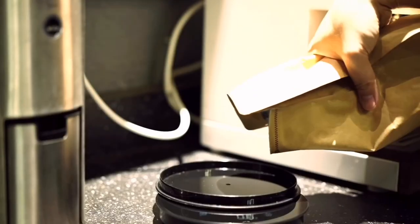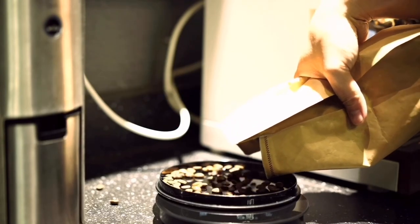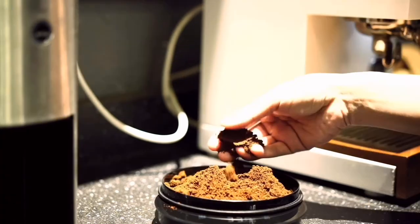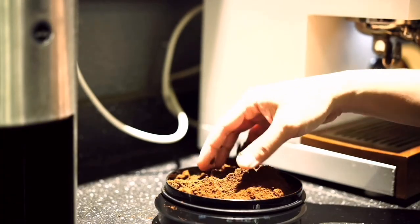Well for a double shot portafilter, I usually grind 17 to 19 grams of coffee. The amount changes because when the coffee is less fresh, the grounds get more compact and you end up putting in a little bit more grounds to get the portafilter filled.